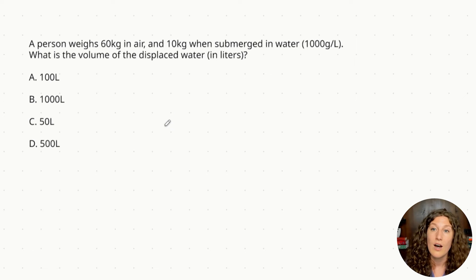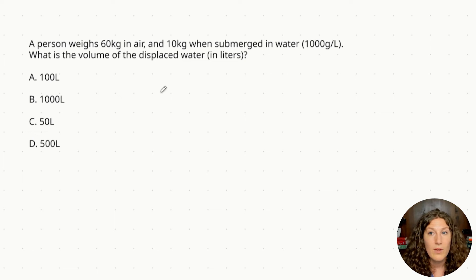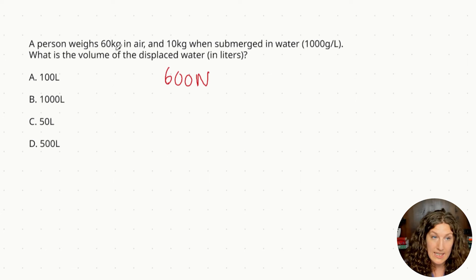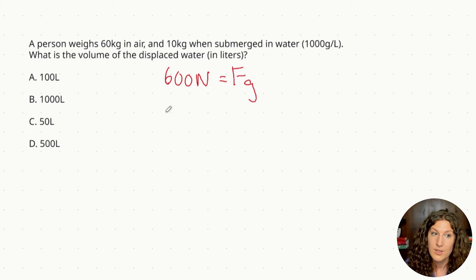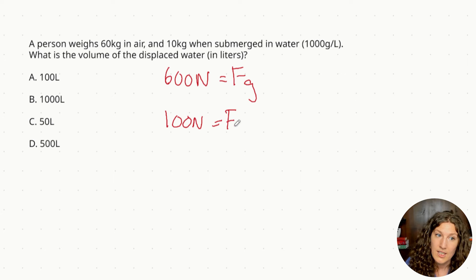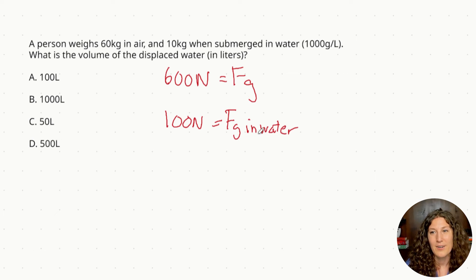When I get a question like this, I'll convert mass to newtons using gravity, since we're normally working with newtons. A person weighing 60 kilograms in air: that's 600 newtons — 60 kilograms times 10 for gravity — which is our FG in air. Then we have 10 kilograms when submerged in water: that's 100 newtons, which is our FG in water. So it looks like we've lost 500 newtons — or 50 kilograms — when fully submerged in water.